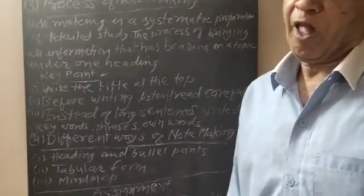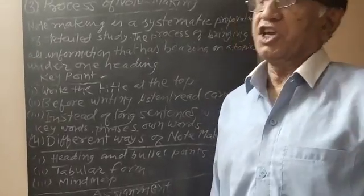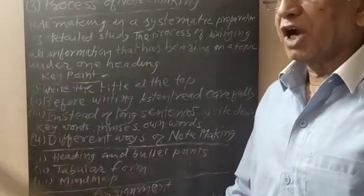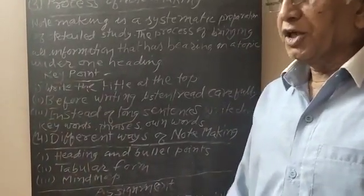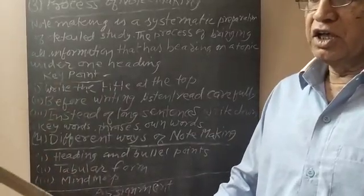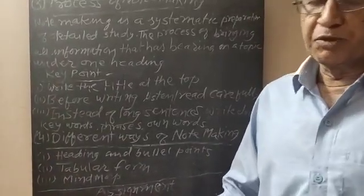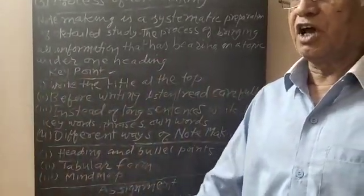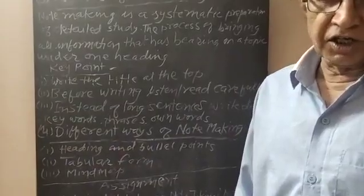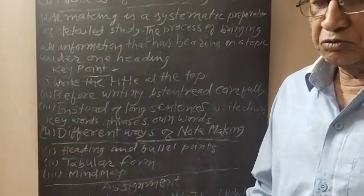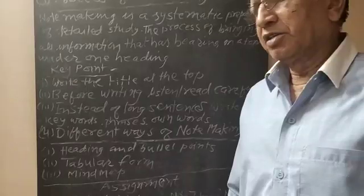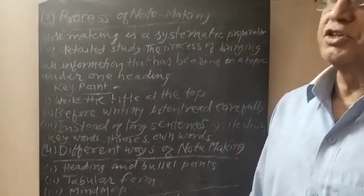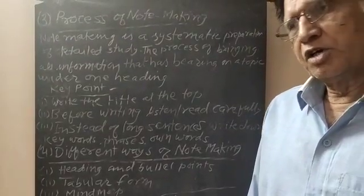And number third, mind map. Mind map is just like a tree, which has one trunk and then branches. So topic is the trunk. And from that trunk, different branches and sub-branches are formed, and in this way, in branches and sub-branches, the note is made.